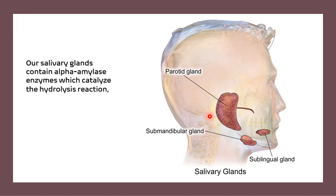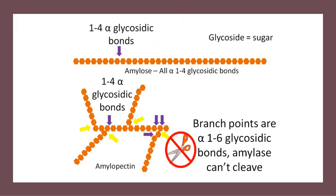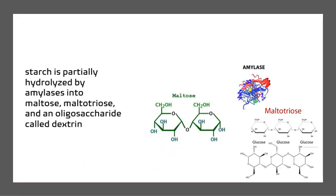When we consume food such as rice, bread, or pasta, our salivary glands contain alpha-amylase enzymes which catalyze the hydrolysis reaction — breaking of the alpha-1,4 glycosidic linkage in the polysaccharide. In our mouth, starch is only partially hydrolyzed by amylase into maltose, maltotriose, and an oligosaccharide called dextrin.